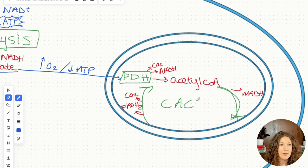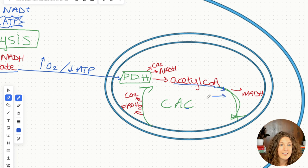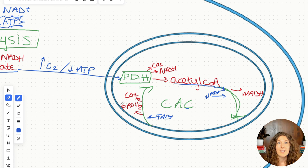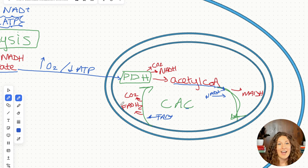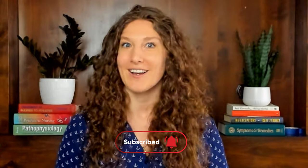Acetyl-CoA is our precursor for the citric acid cycle as it goes in. We also need NAD+ and FAD+ — those are our non-hydrogenated electron carriers — and then we add electrons to them; they become FADH2 and NADH. Please subscribe to this channel for more videos that help you learn MCAT content, test-taking strategies, and mental fitness so you can perform your best on test day.